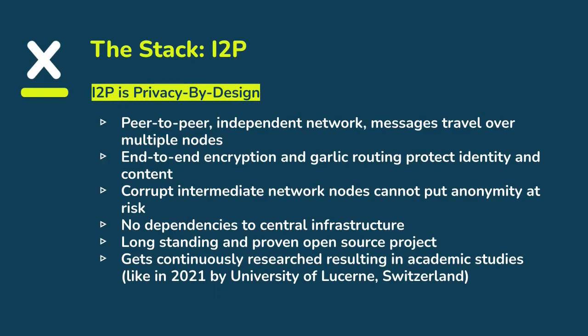Faulty remote network nodes cannot put the privacy or anonymity of another node at risk. There is no dependency on central infrastructure. I2P comes in two different flavors — Java or C++ — and is a long-standing, very proven open-source project. At diva.exchange, we currently support research together with the University of Lucerne, researching I2P, its stability, its scalability, and more.